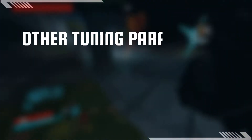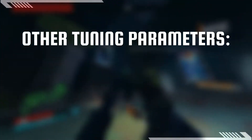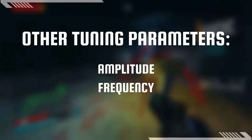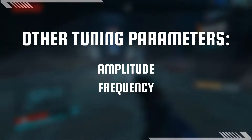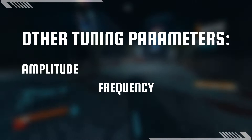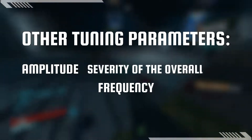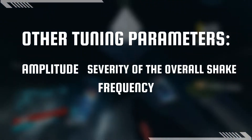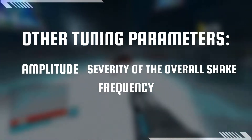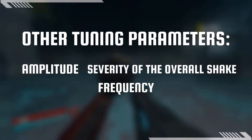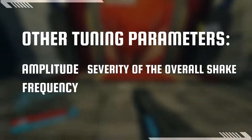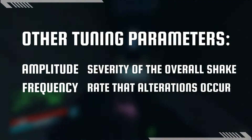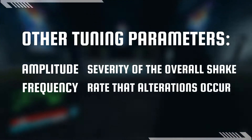These parameters can be further tuned by alteration of the amplitude and frequency of their change over time. Simply put, amplitude is the severity of the overall effect — higher numbers result in more rotation, more translation, and more FOV alteration. Frequency, however, is the amount of times per unit time that the alterations will occur.